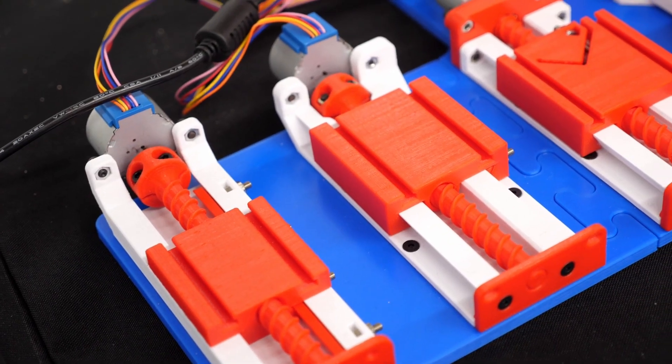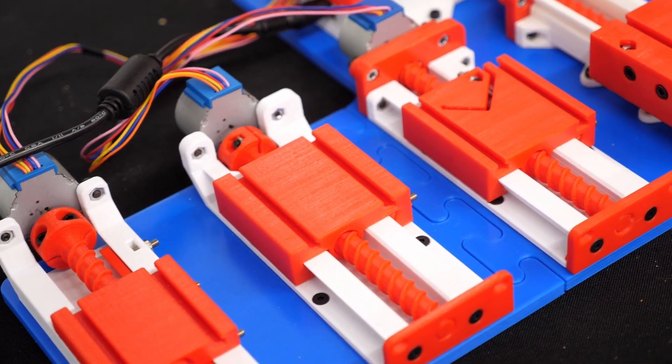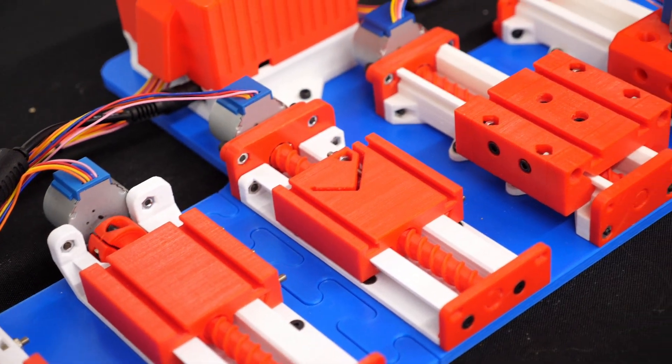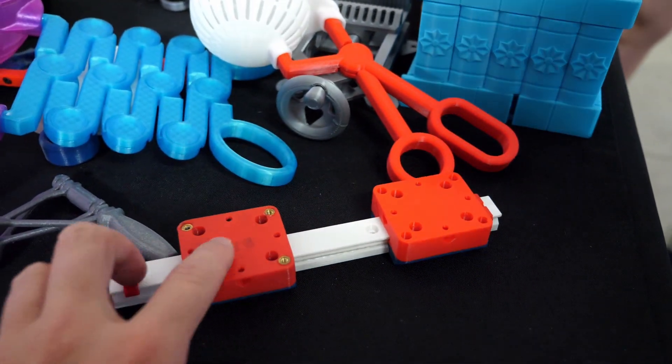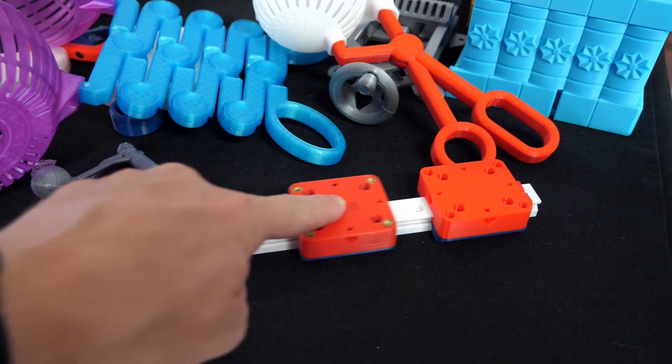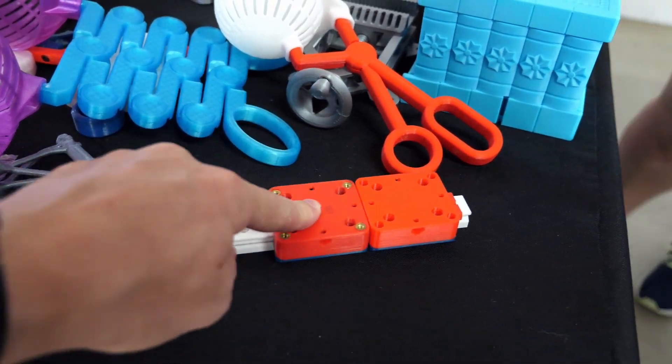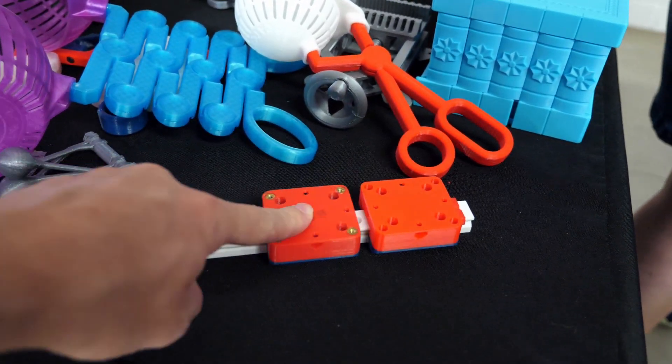John told me that he started designing fully 3D printed linear rails with recirculating ball bearings, fully printed besides the steel BBs on the inside, and then got the idea to make a complete 3D printer using this idea.